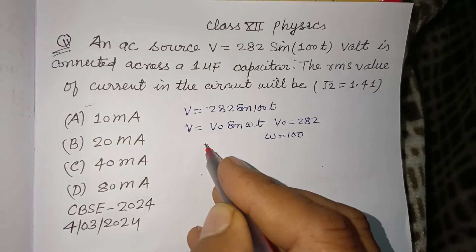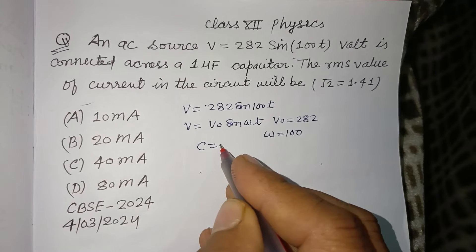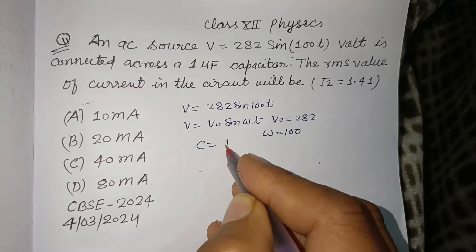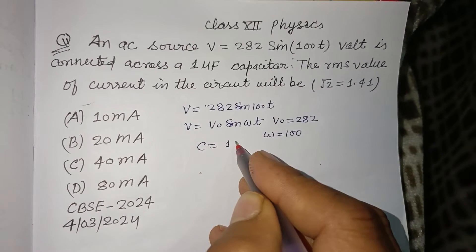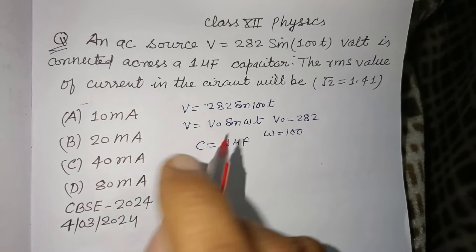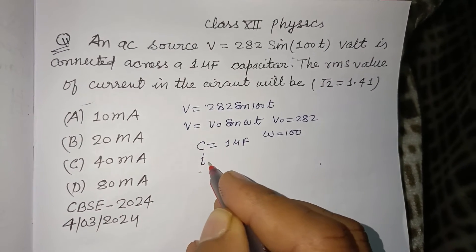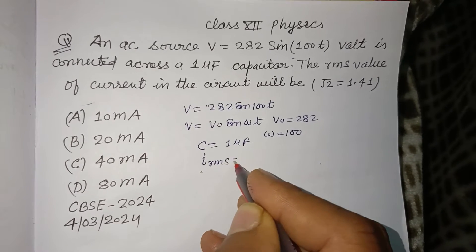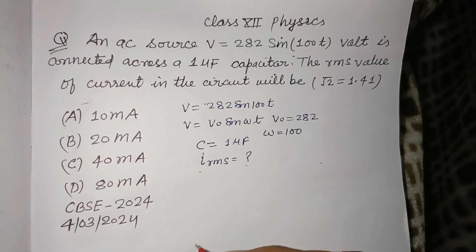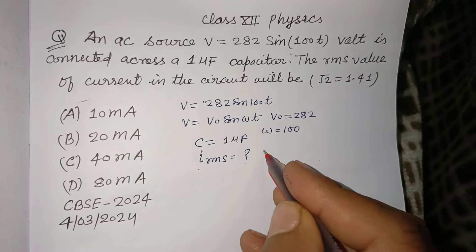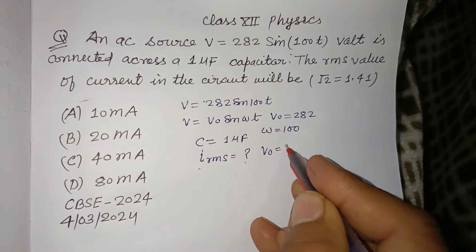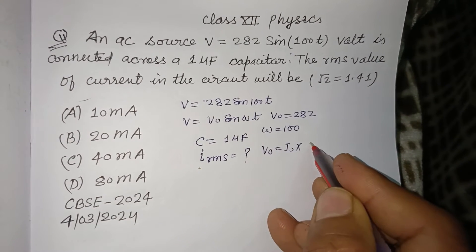Here, C is given as 1 microfarad. The question is asking for the RMS value of current. We know that V0 = I0 × Xc.